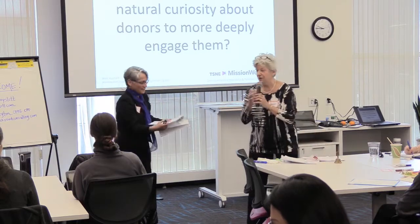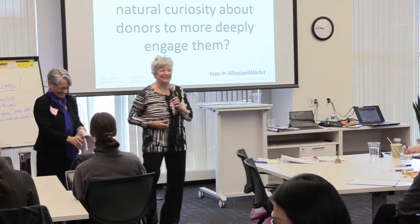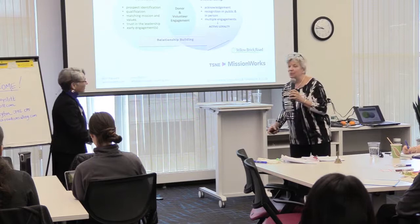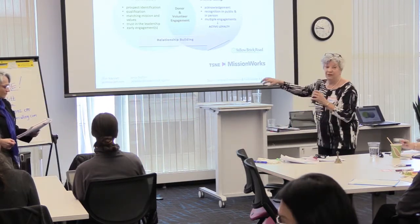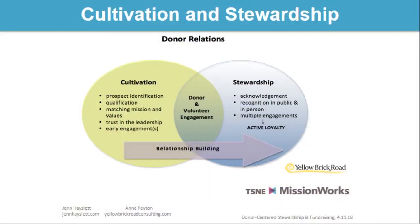We want to make sure that you understand the difference between cultivation and stewardship. We have done this Venn diagram. The big picture on the left is cultivation activities: prospect identification, qualification — does that person have a connection to the organization, do they give philanthropically, and do they have capacity to give? Matching mission and values, trust in the leadership, early engagements. Then once a donor makes a gift, they switch over into stewardship.